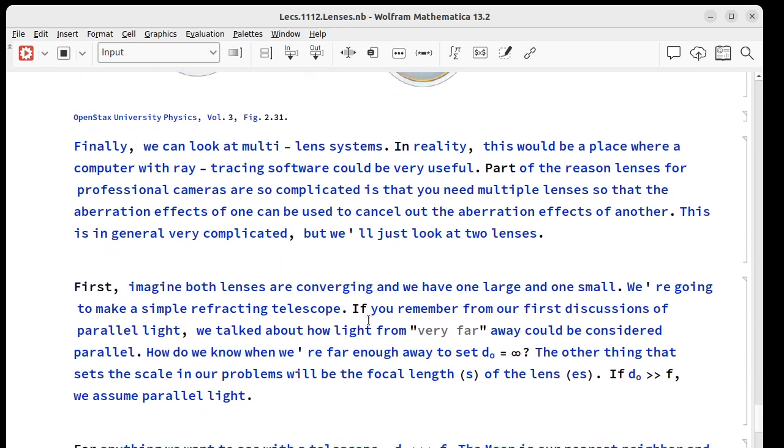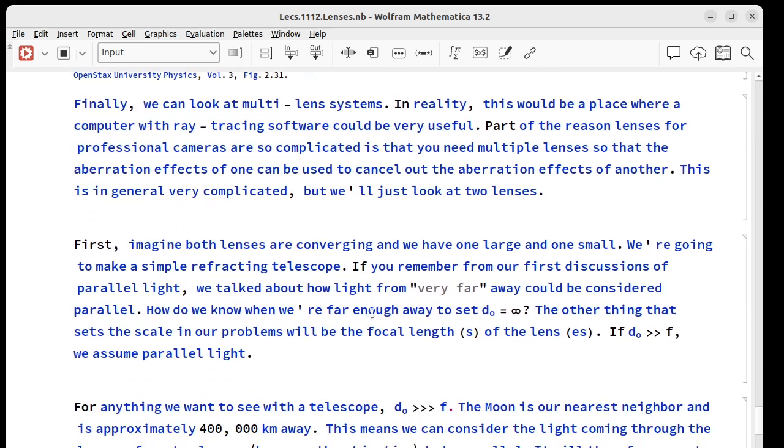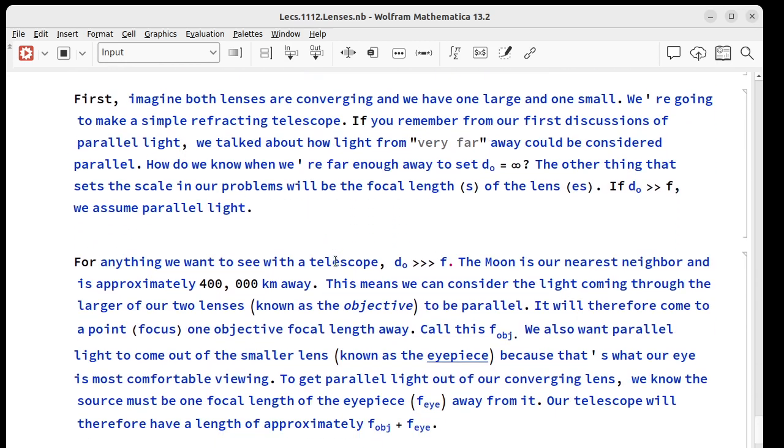Finally, what if we had more than one lens? This is something where the computer that has ray tracing software would be very useful. If you ever had the misfortune to drop a professional camera lens or if you just look online for an exploded view of one, you'll see it's not just one lens or two or three. There are a bunch of lenses in there because they're trying to arrange them to cancel out the aberration effects of one with another one. That could be a horrible mess, so we're just going to look at a two-lens system.